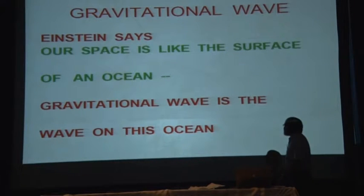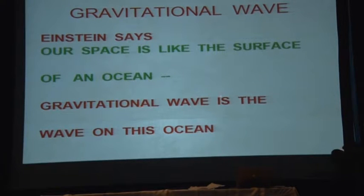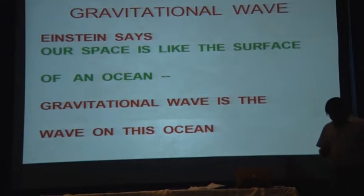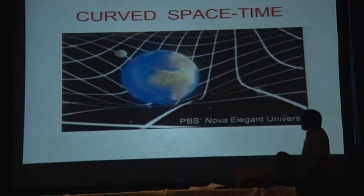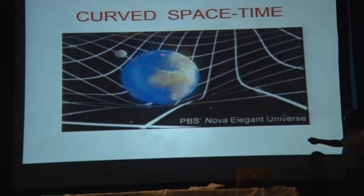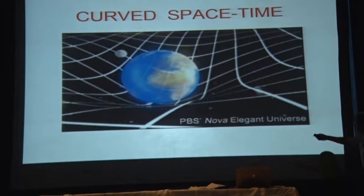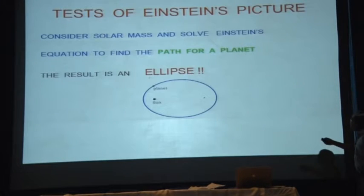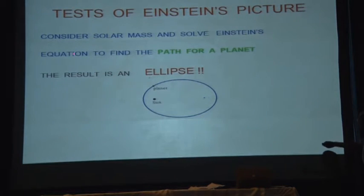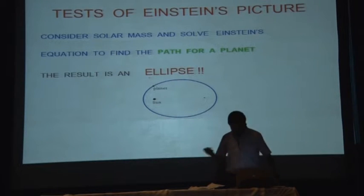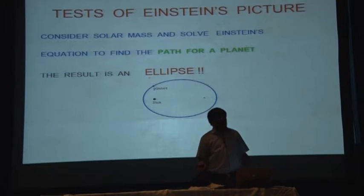After the proposal of this subject, Einstein said that space is like the surface of an ocean, and the gravitational wave is the wave on this ocean. This is the sun — it introduces curvature of space around it. This is our Earth, and our Earth is bound to move in a curved path. Einstein used his equation to calculate the path of the planet and found that it is an ellipse. It is a fantastic success that planets move in elliptical paths.